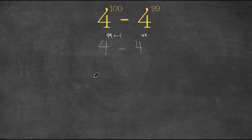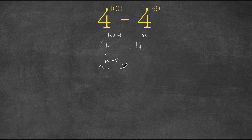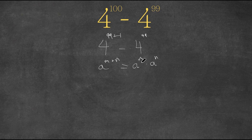Now what we're going to do is we're going to use a useful exponential property. So let's say we have a to the power of m plus n. This exponential property states that this is equal to a to the power of m times a to the power of n. Because when we're multiplying exponents with the same base, all we do is add the exponents. So what we're simply doing is we're reversing this rule.